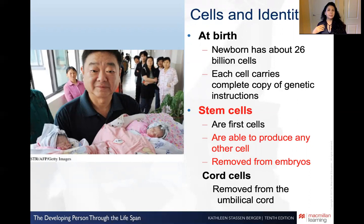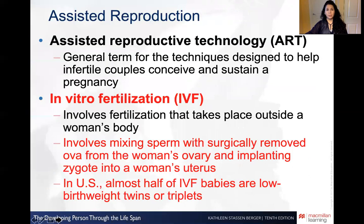Cord cells don't have all of the amazing properties of stem cells, but they're much more accessible in that you could retrieve them during birth and save them for a later date. So again, stem cells and cord cells are really useful in ongoing research.